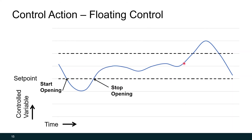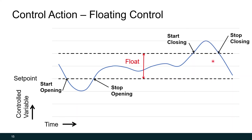Eventually, let's say some sun starts shining through the window and the space starts getting warmer. We'll hit our control differential and we'll be floating between our control differential bounds until we exceed the control differential, in which case we start closing the valve. Eventually, the space temperature will start dropping back into our control differential range, and when we cross the control differential, we'll stop closing.